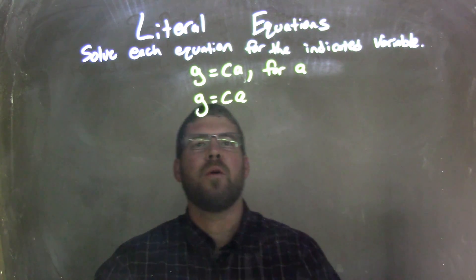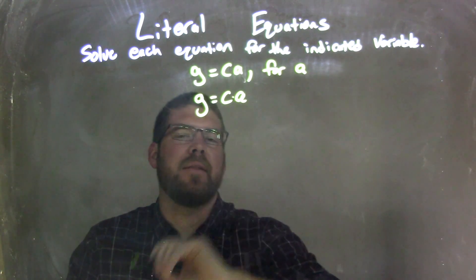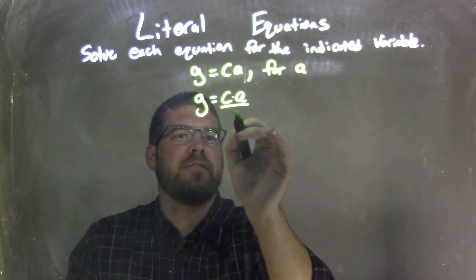Then I need to get A by itself. Well, there's multiplication going on between the C and the A, so opposite multiplication is division.